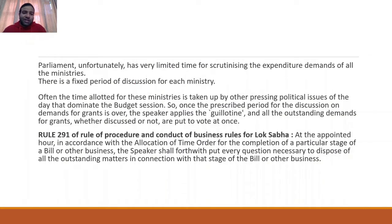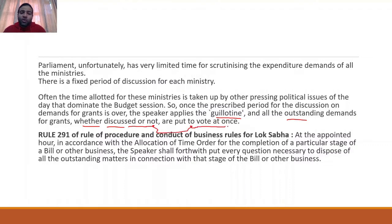The complete explanation: each ministry's demands are discussed in Parliament, but there is not enough time to discuss all ministries and departments. So the Speaker applies the guillotine process — all outstanding demands and grants are put to vote together, whether discussed or not. This is done under Rule 291 of the Rules of Procedure and Conduct of Business of Lok Sabha. You can mention Rule 291 in mains answers. Remember: this provision is not in the Constitution — it is under Lok Sabha's rules.